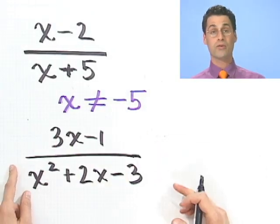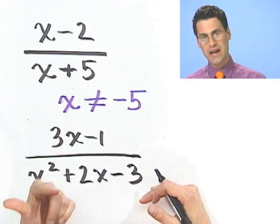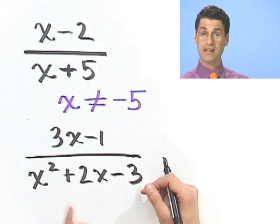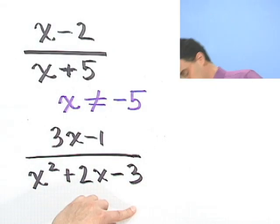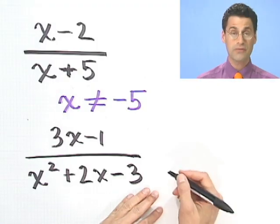Now, so here is another rational expression. Polynomial divided by polynomial. Now, what's the domain? Well, top can be anything, but the bottom cannot be zero. So, I have to ask myself, when can the bottom be zero? Well, so we have to go off and do a little problem there and just ask ourselves, when can the bottom be zero? So, let me factor.